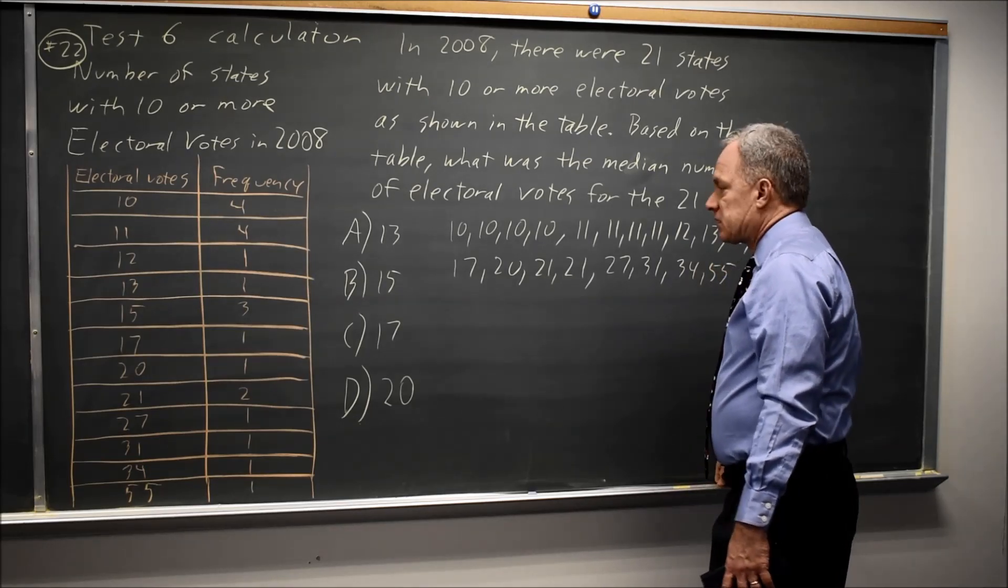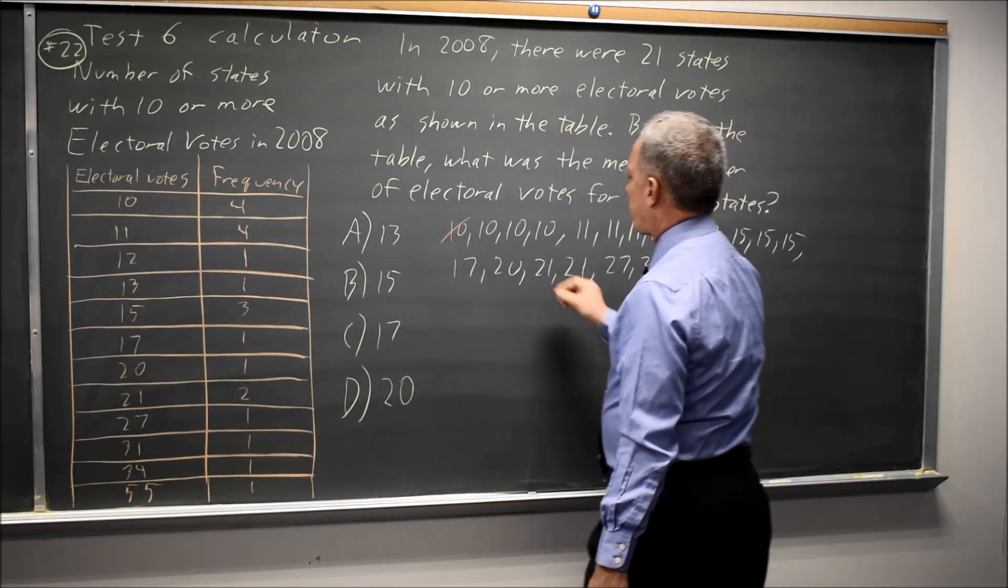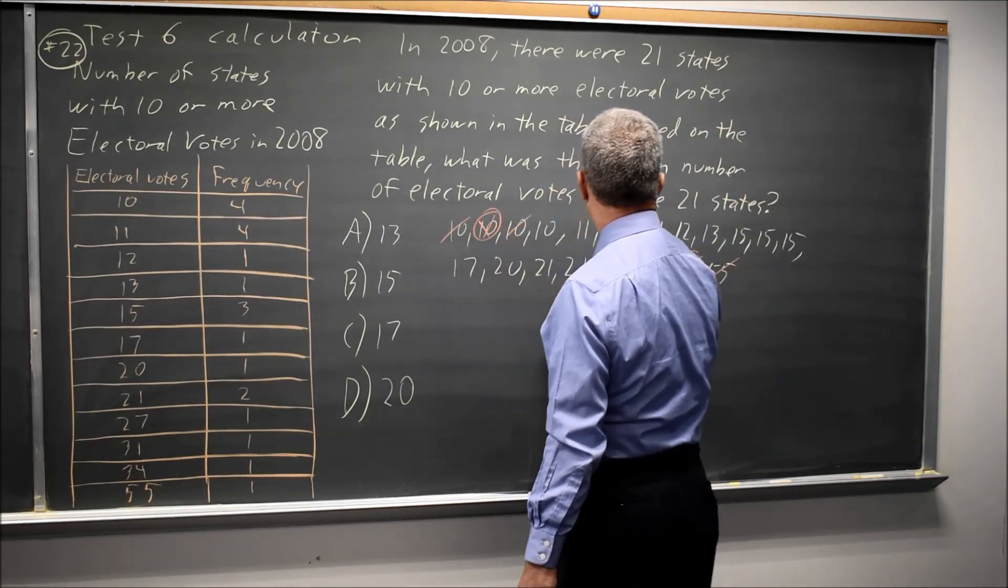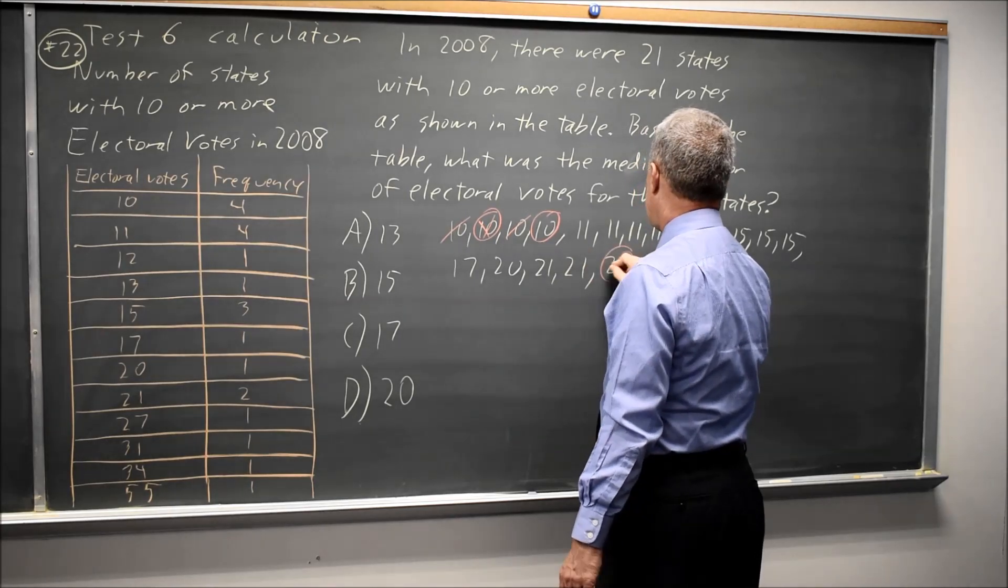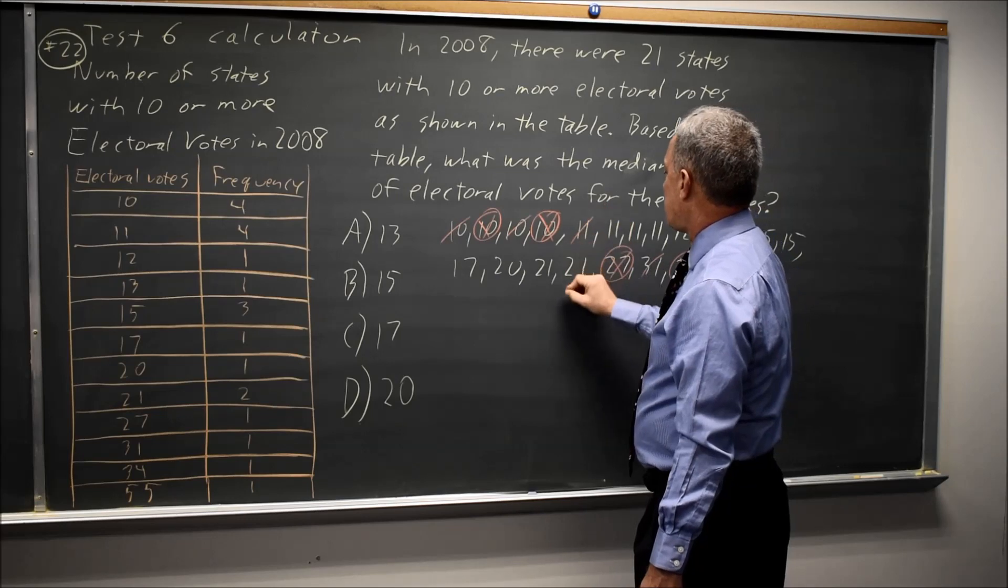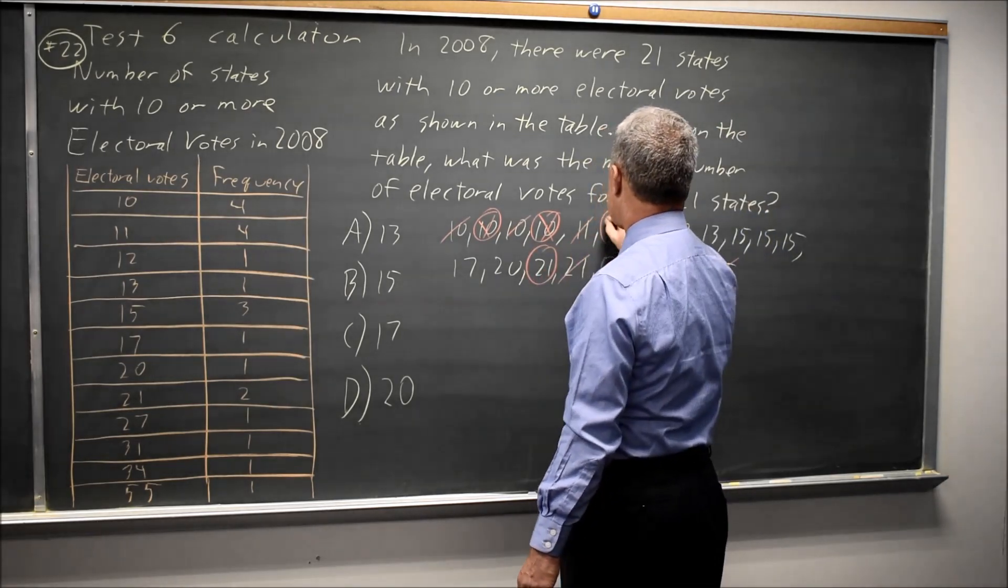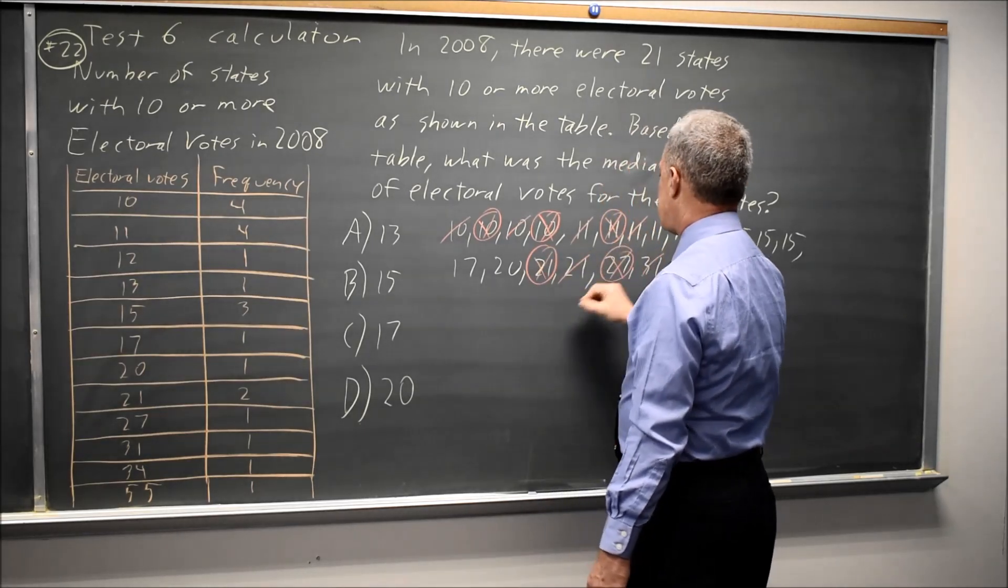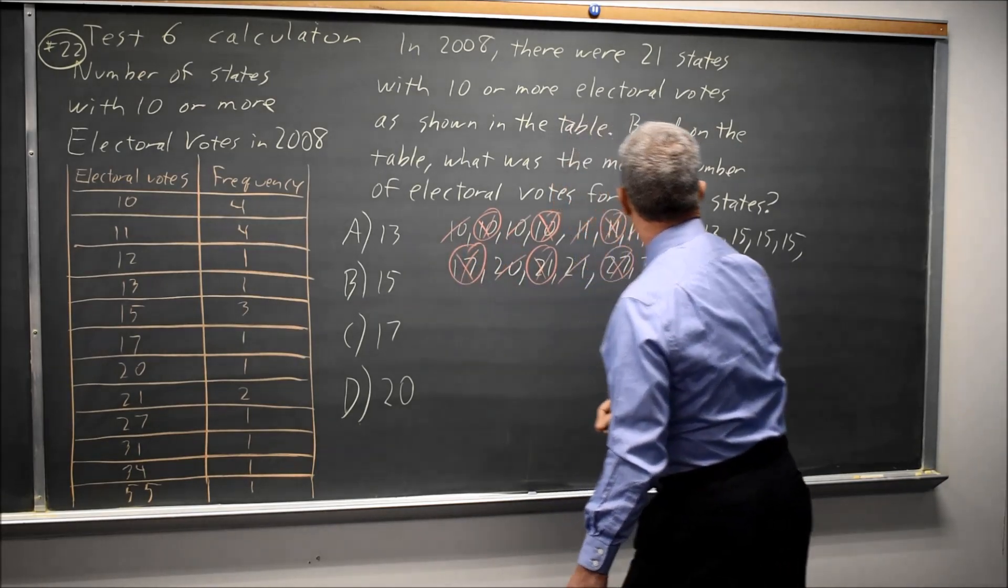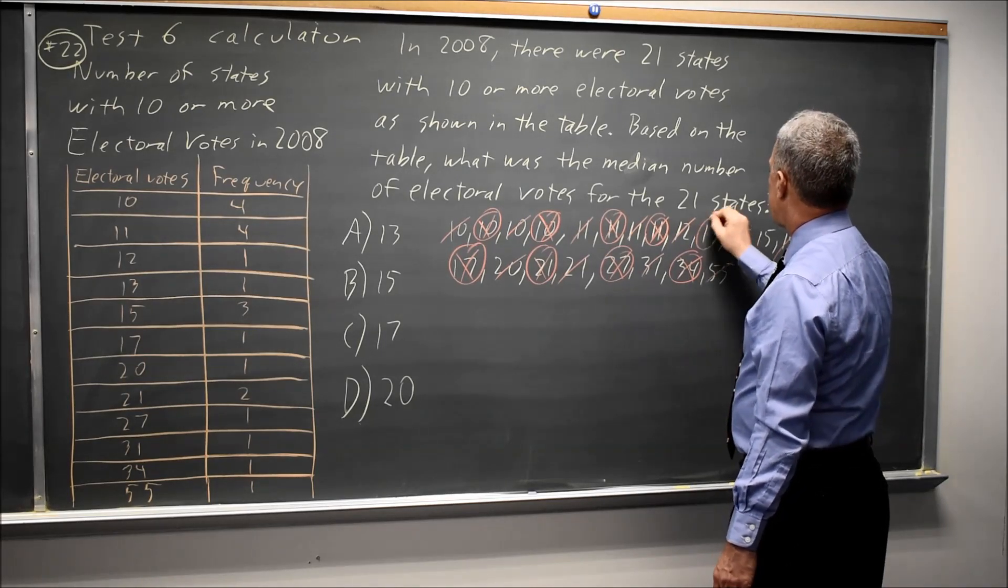To find the median from this list, I can cross out the highest values and the lowest values. Second highest, second lowest, then the third highest and third lowest, then the fourth highest. I like to make my marks a little different so I don't get lost on how many I've done. And then fifth from the bottom, fifth from the top, and number six. Number seven, number eight from the top and bottom. Ninth value from the top and bottom, tenth value from the top and bottom.